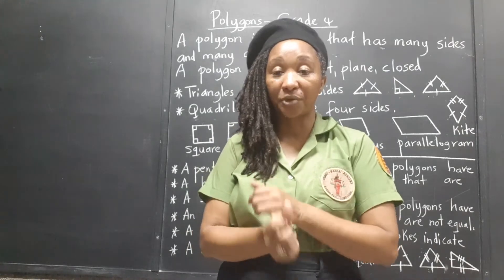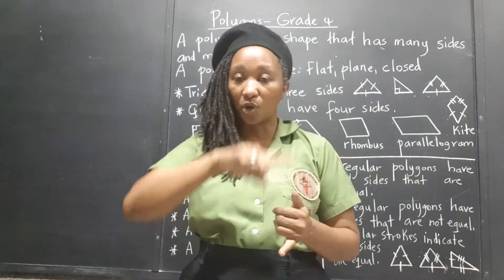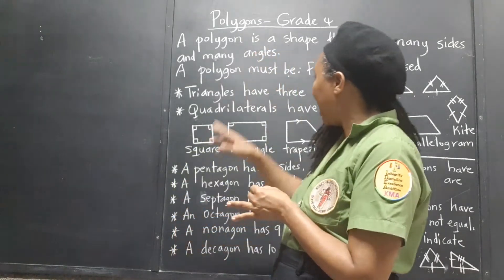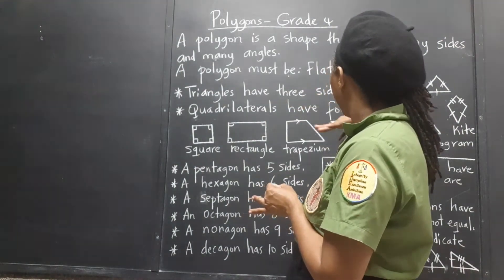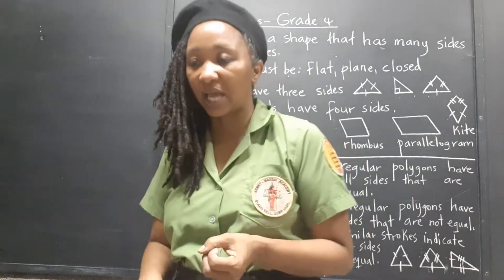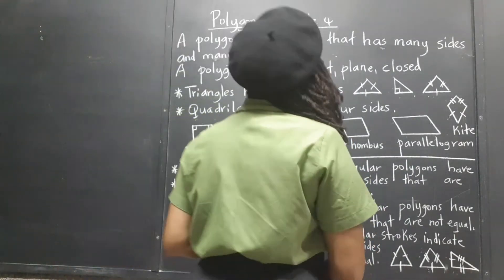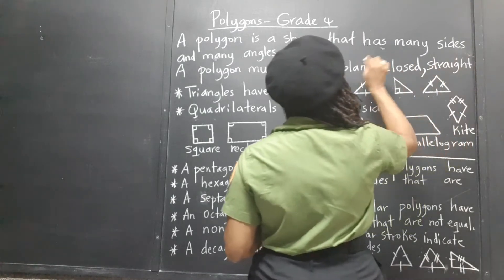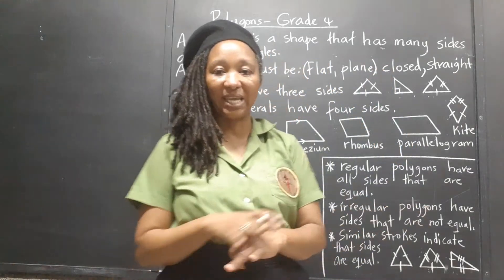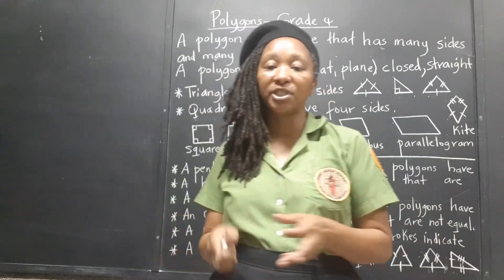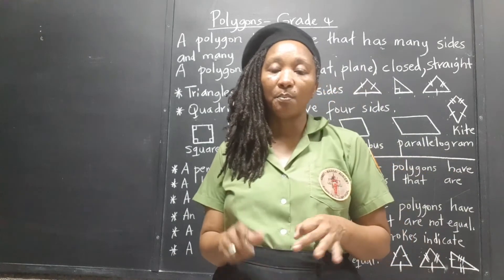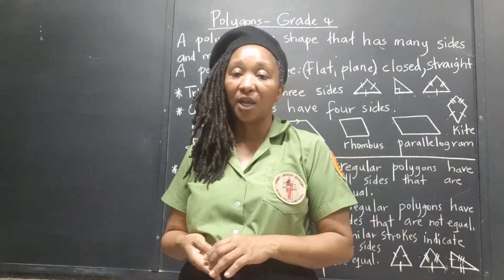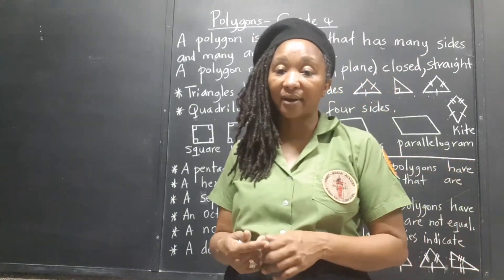It must have straight sides — no curve anywhere. It must be flat, a plane figure — P-L-A-N-E. And it must be closed — no opening anywhere, all sides connected to each other. There will be many sides, at least three. So the triangle is the first polygon, with at least three sides and at least three angles.